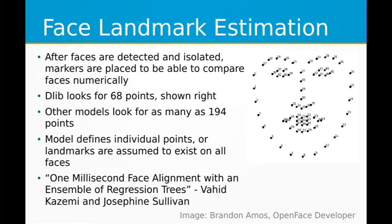The next step, which is actually more important when it comes to facial recognition, is landmark estimation. Once a face is isolated in a picture, you need to be able to numerically compare it to other faces in order to identify them. One example is DLib, which has a facial recognition library that looks for 68 points which can be roughly approximated on any given face. Some models look for as many as 194, which is more accurate but requires higher resolution data as well. Models define individual points or landmarks assumed to exist on all faces, and once you have those points, you can measure the distance between them. The math behind this is linked in a paper — one millisecond face alignment with an ensemble of regression trees.